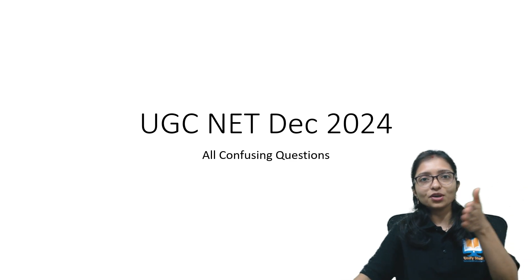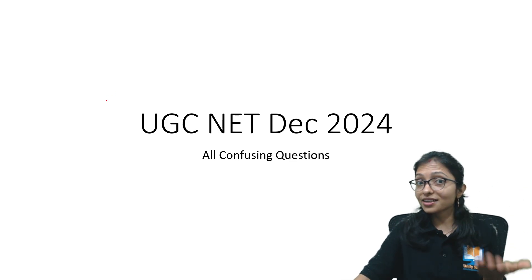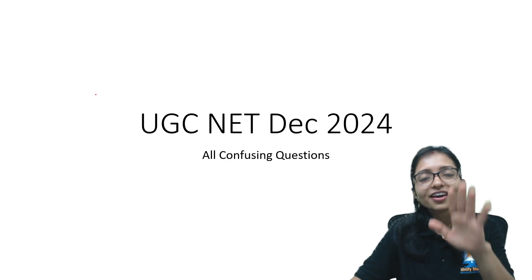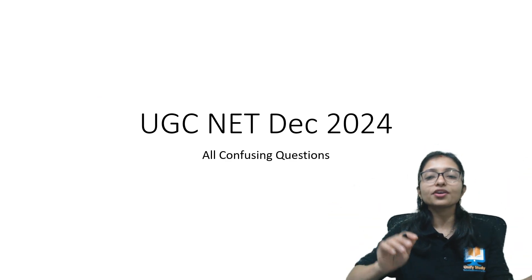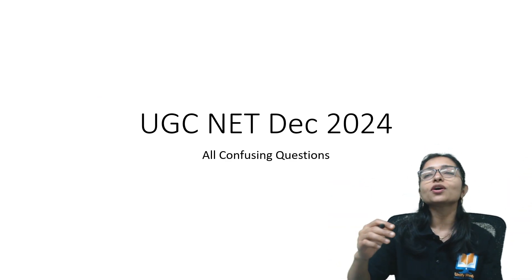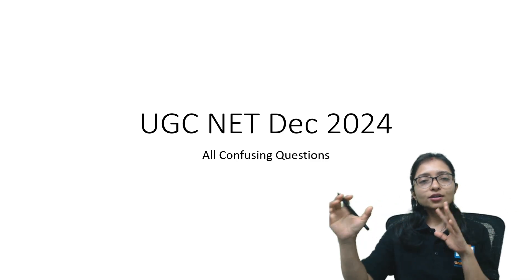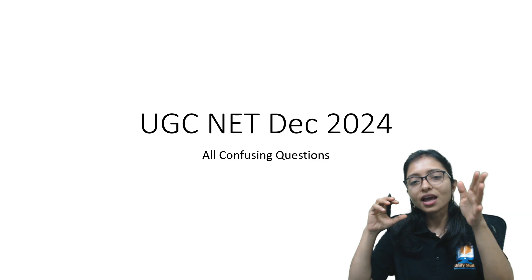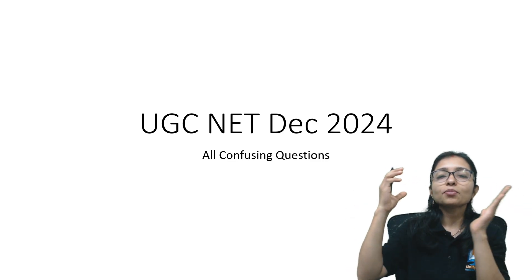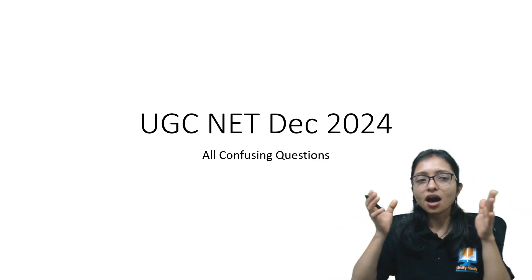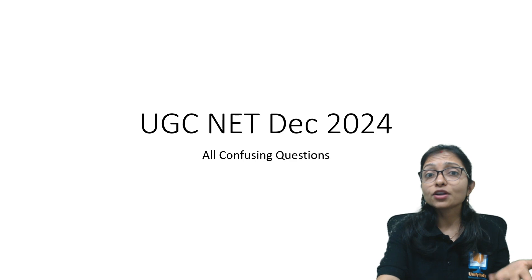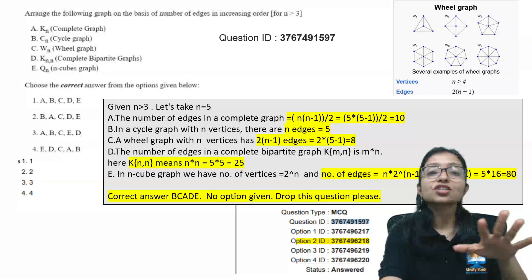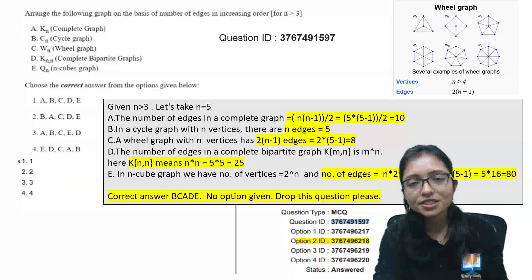They are getting 150, 160 also. But that does not mean in Unified Study more than 200 is not there — yes, we have good scores also, but those who were able to perform well... the problem is why the maximum number of students are not able to get a good score, what the cutoff will be, and which questions we can challenge — I will tell you everything here.